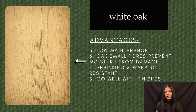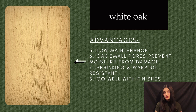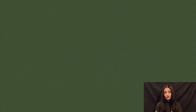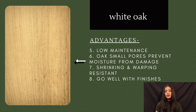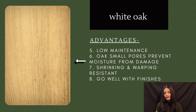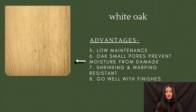The seventh advantage is shrinking and warping resistance. Because of weather changes, many woods shrink or expand, but with white oak wood there is no such problem. Last, it goes very well with finishes — because of the texture, the finishes look good and shiny.